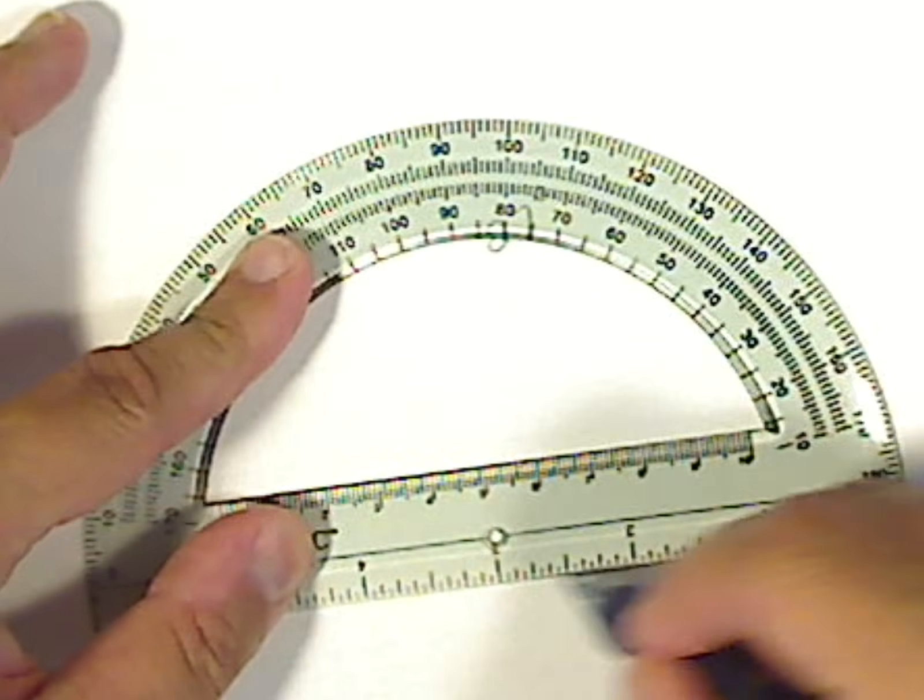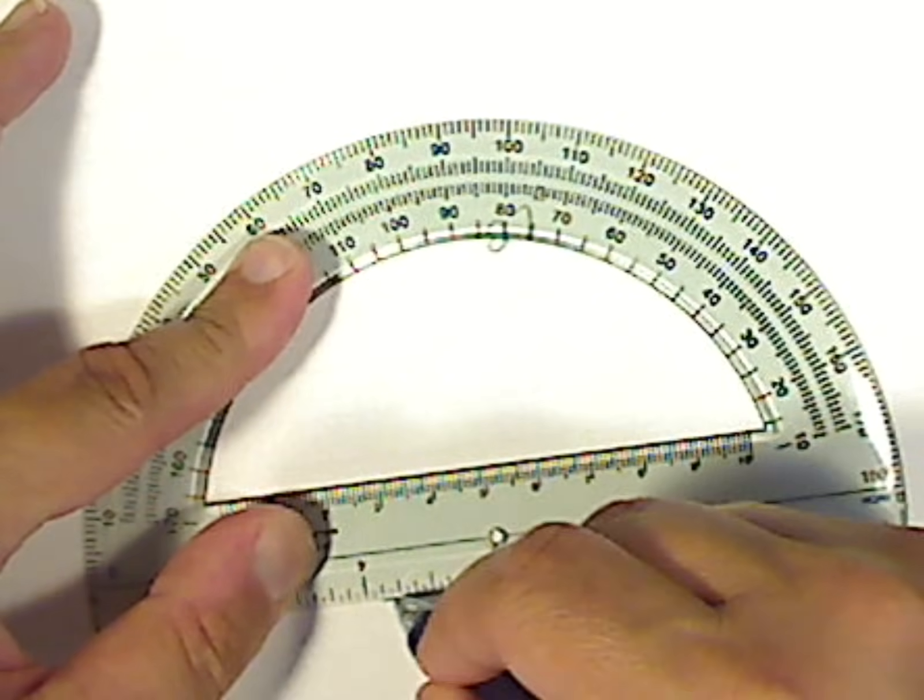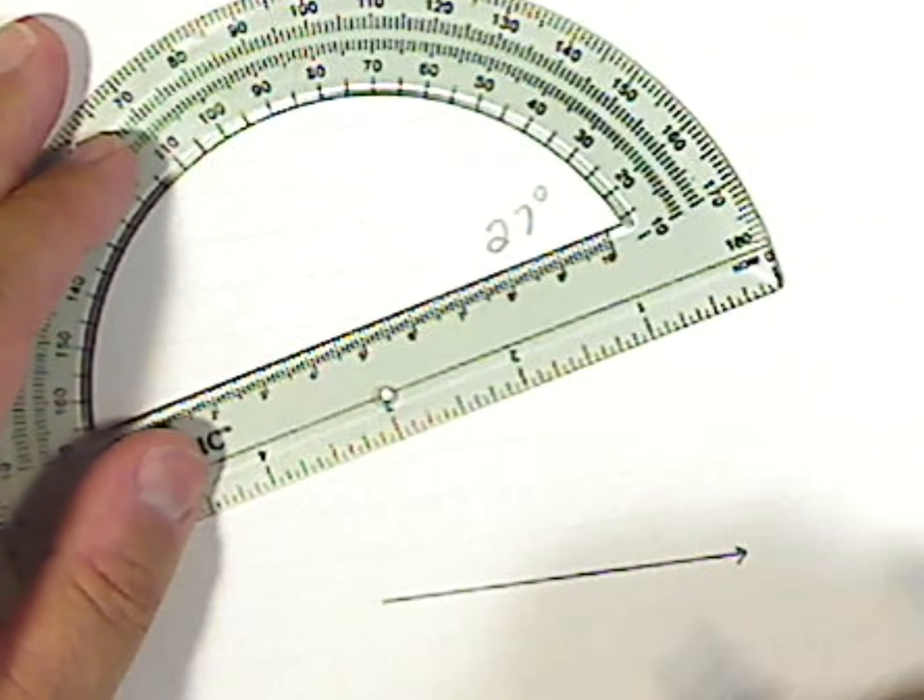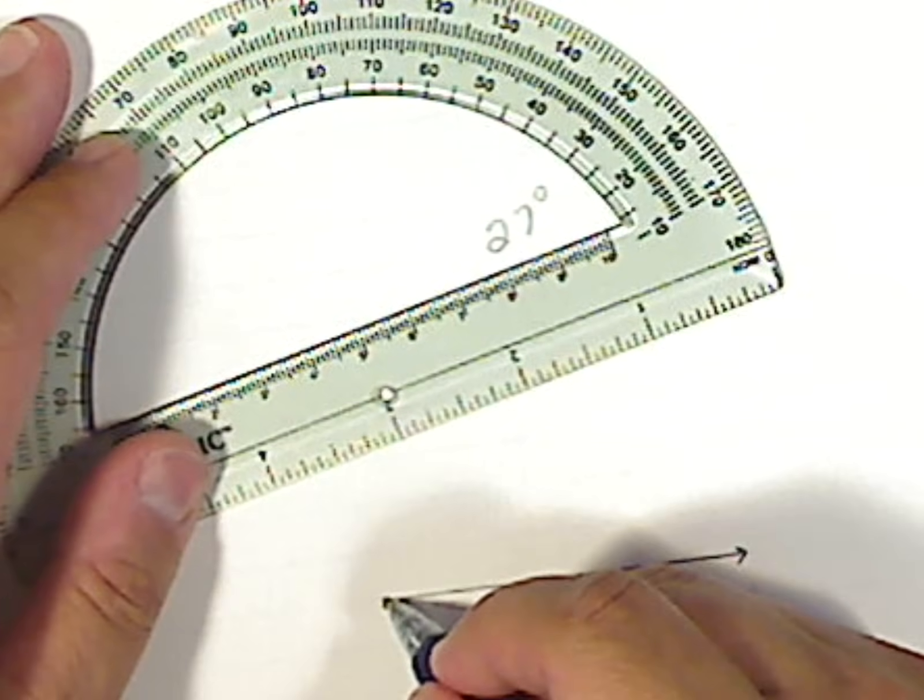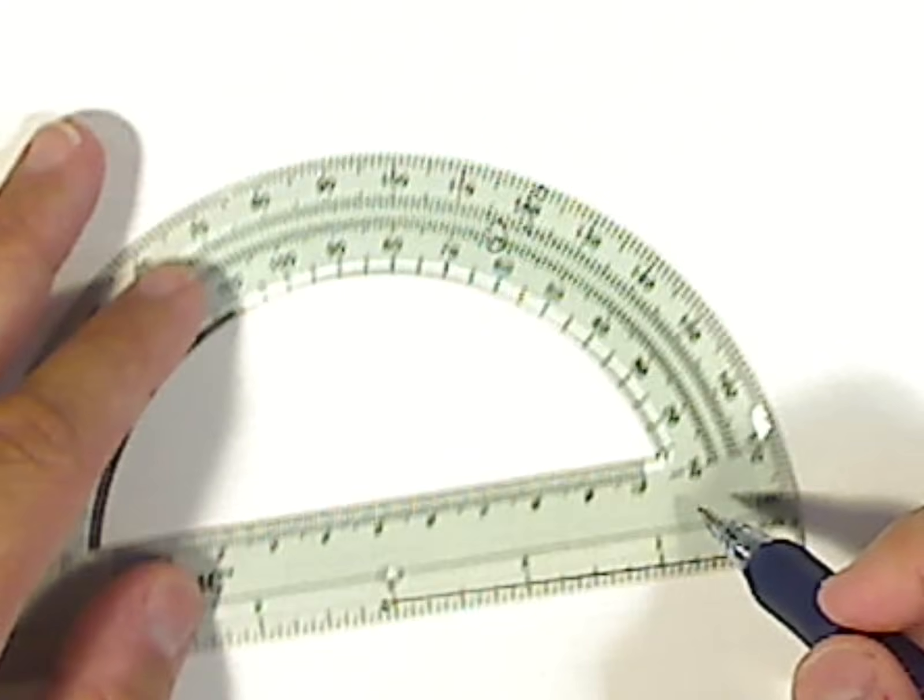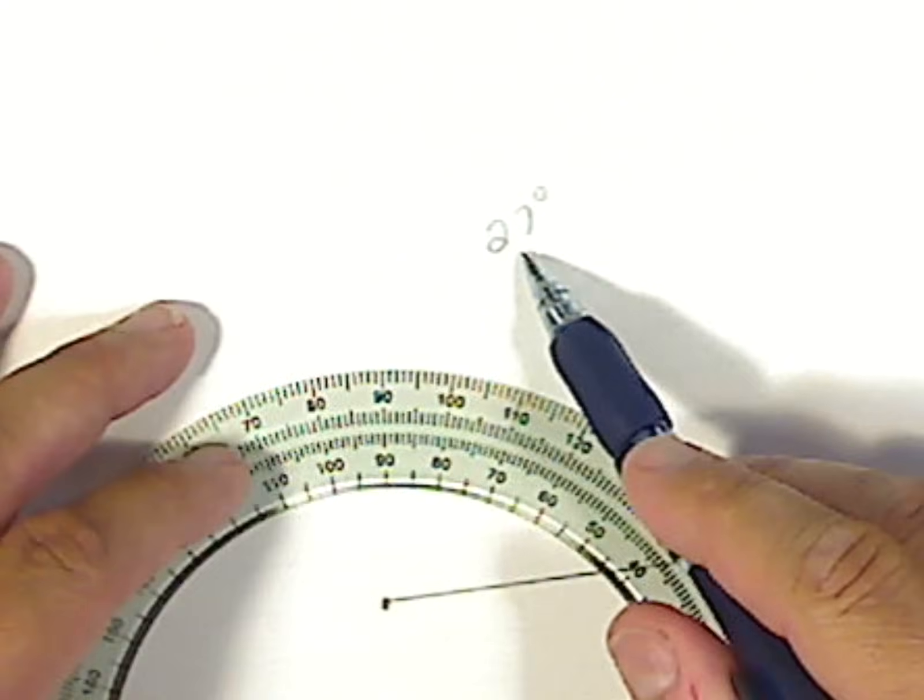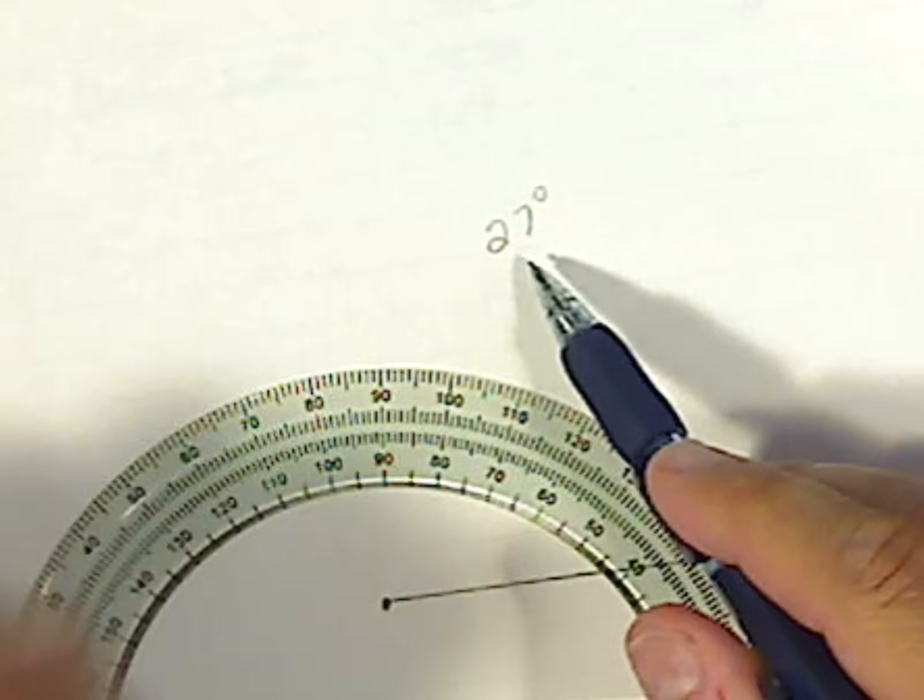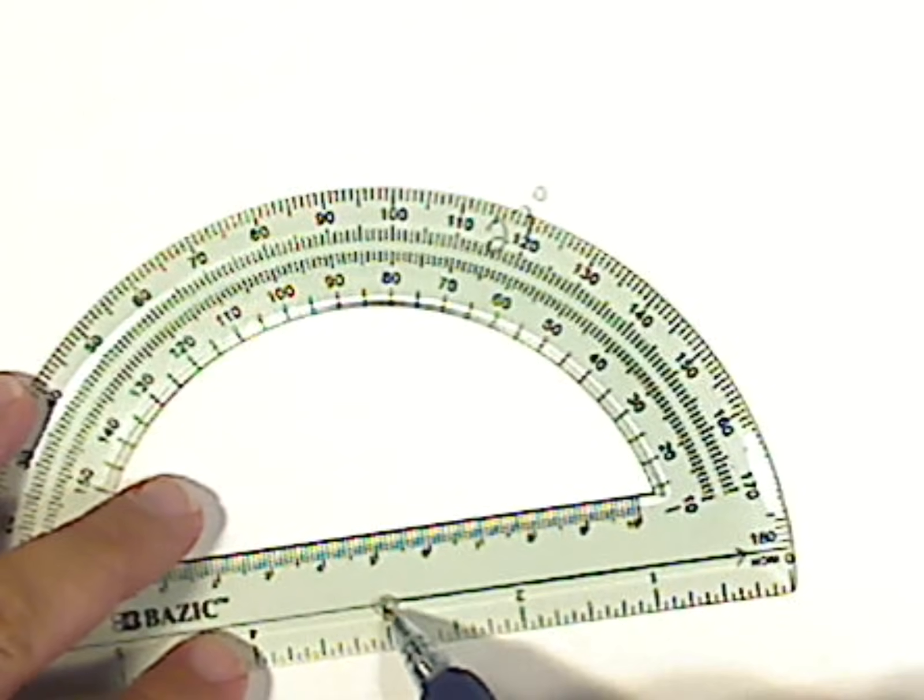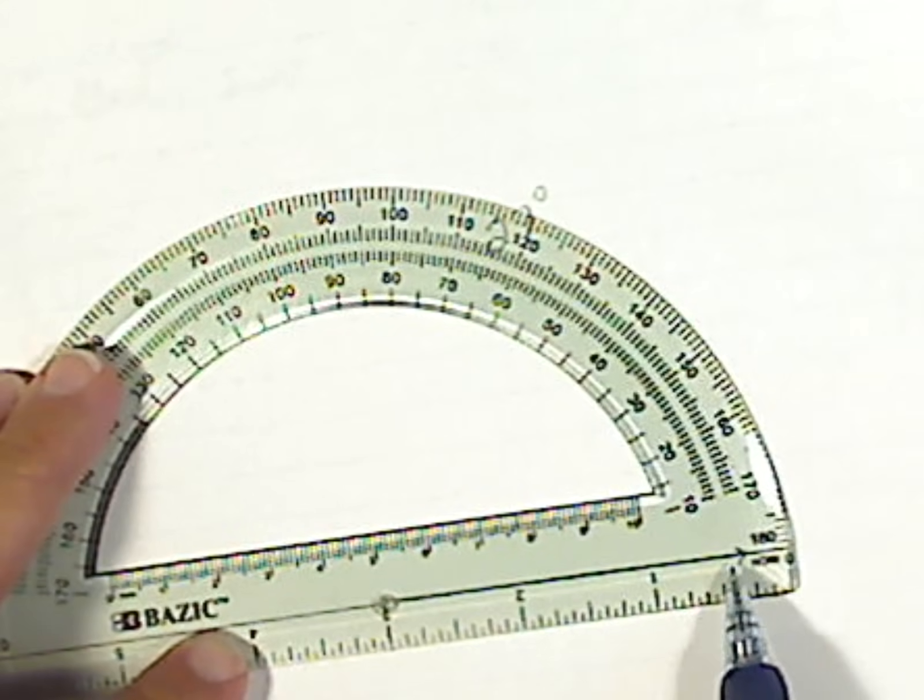So I'm going to draw a ray. A ray goes to the right in this case. It could go to the left, it doesn't really matter. I drew mine horizontal, it could be vertical. The idea is I have to make sure I have 27 degrees of separation. I put the vertex inside the hole. I line this ray up to zero.